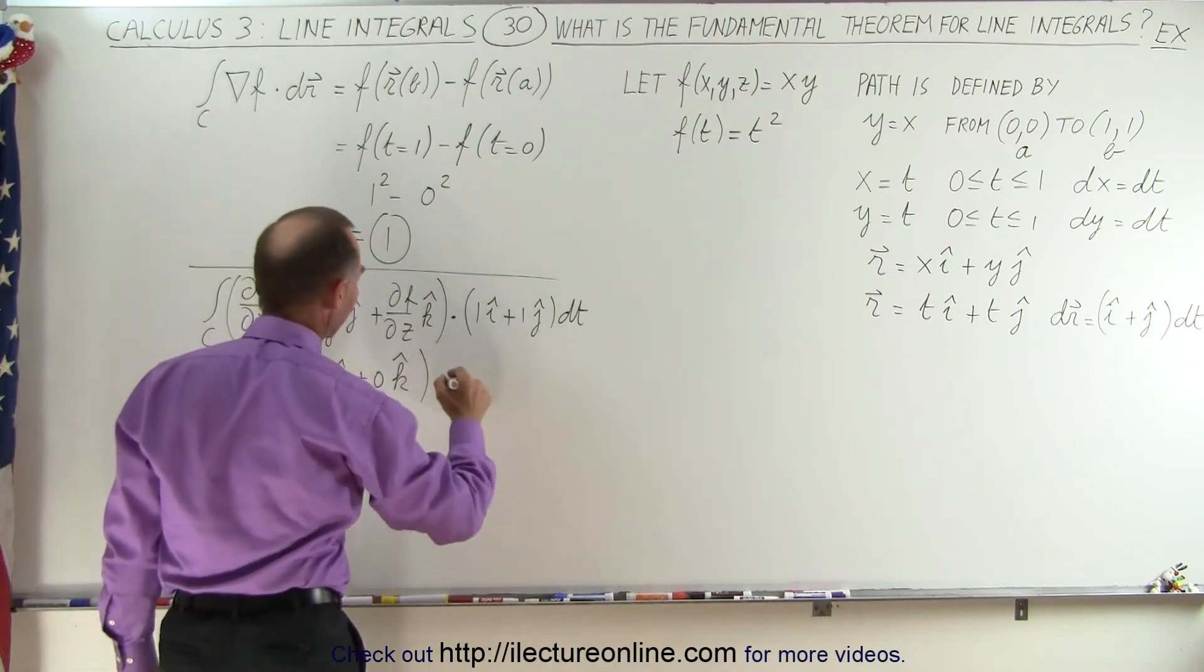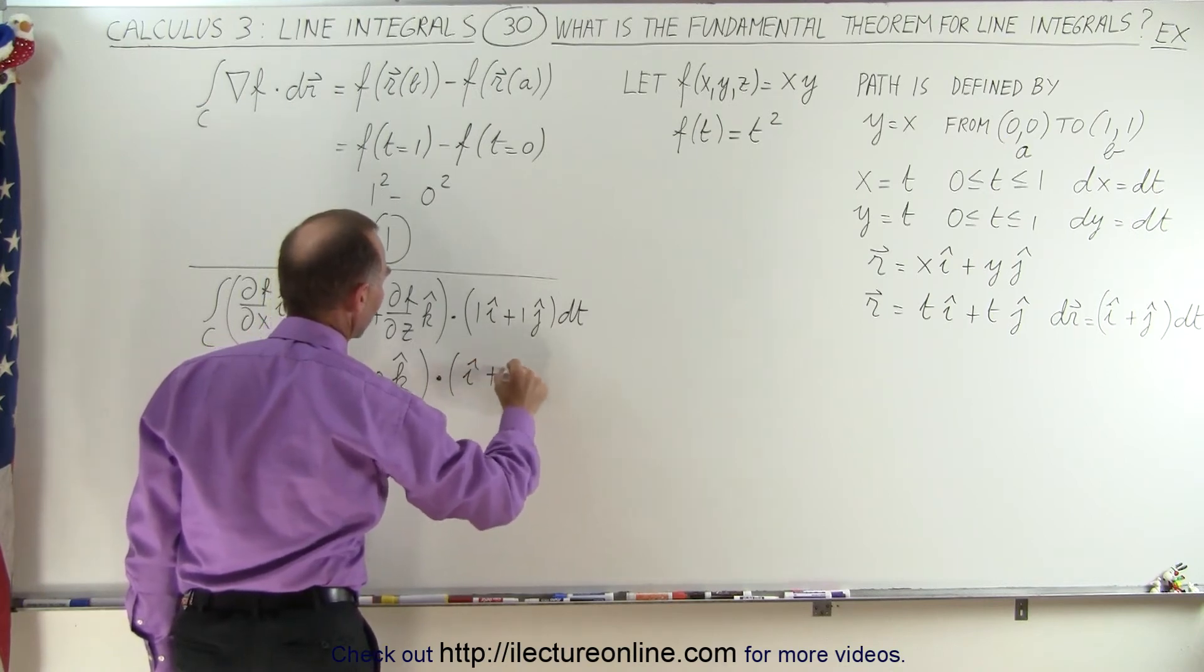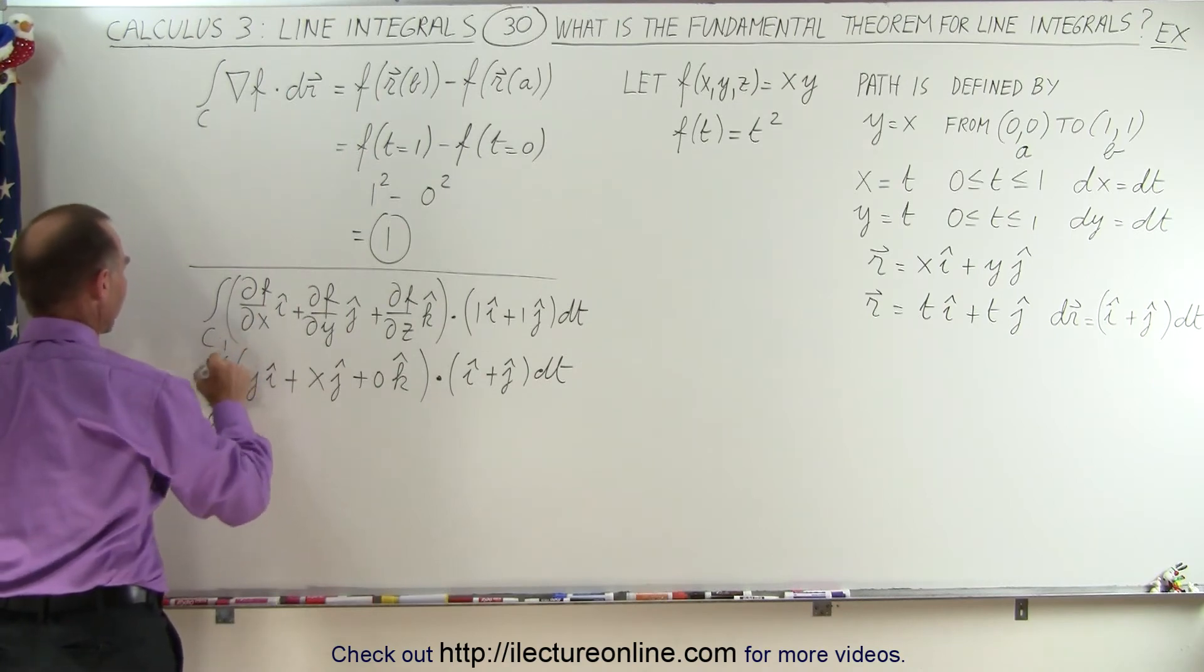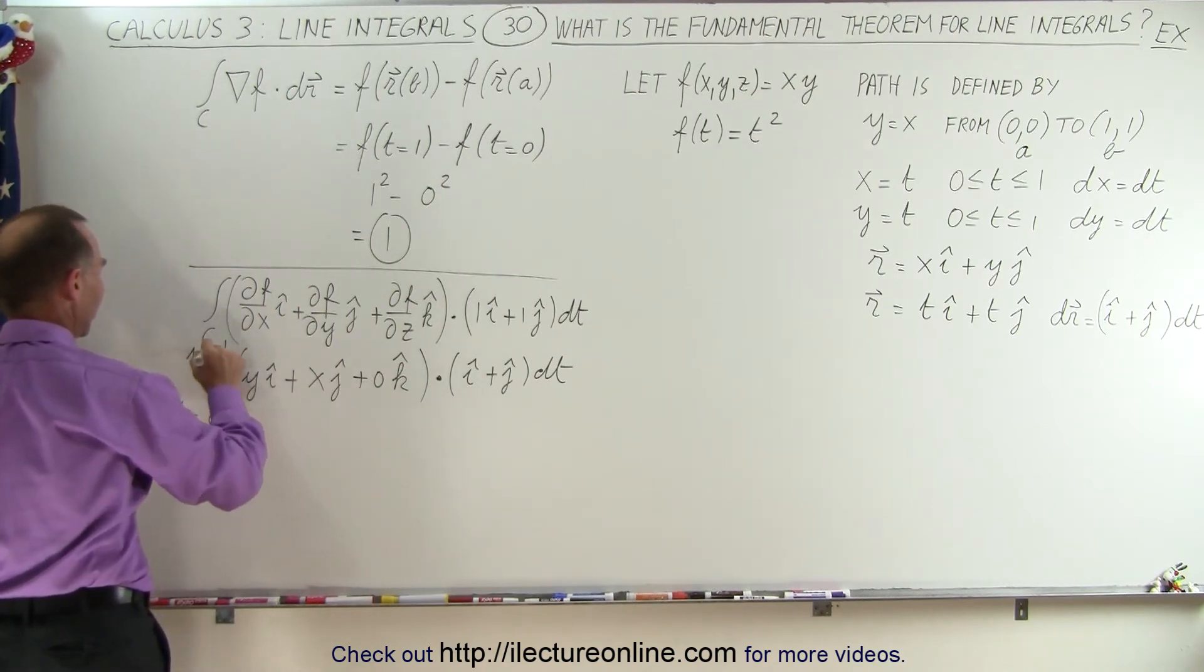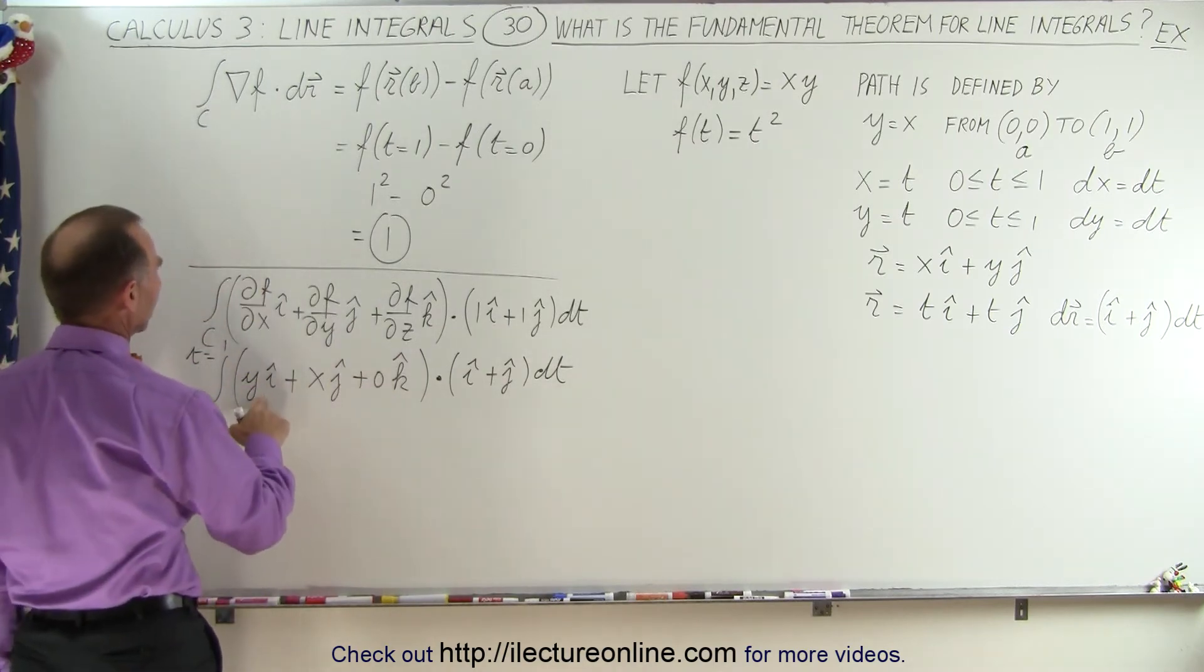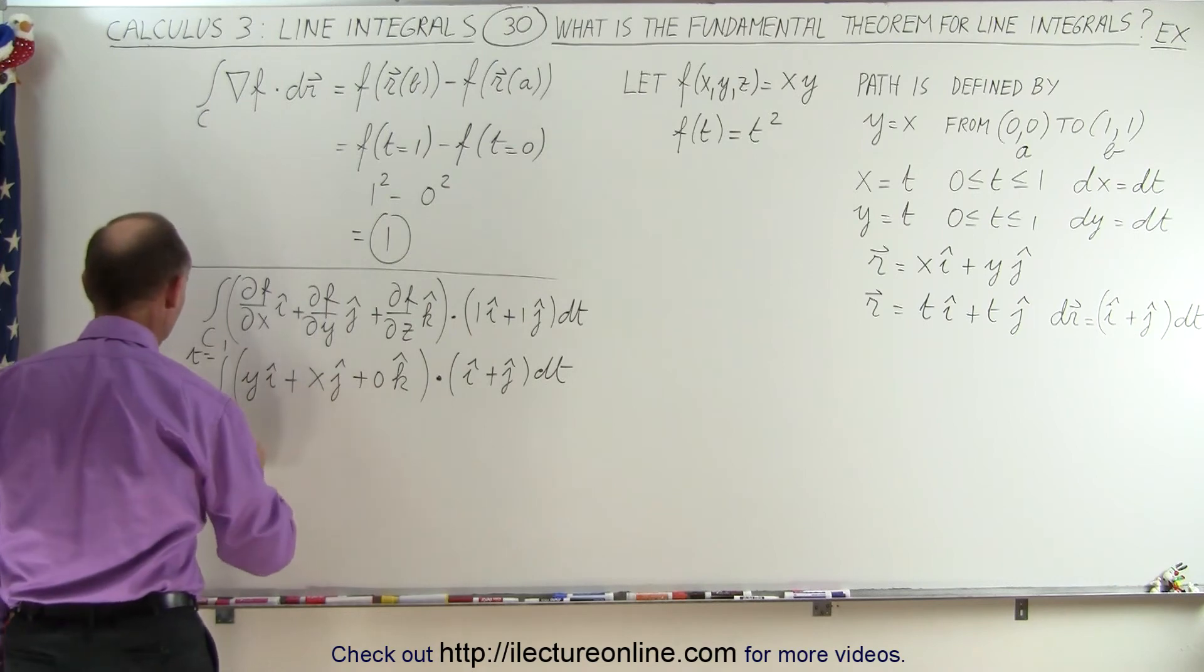That's good because we don't have a k there, so we're going to dot this with i plus j times dt, and we're going to integrate from t equals 0 to t equals 1, so these are the t limits. And when we multiply these together, of course, what we're going to do instead of writing y and x, we're going to write t, so this is going to become the integral from 0 to 1.